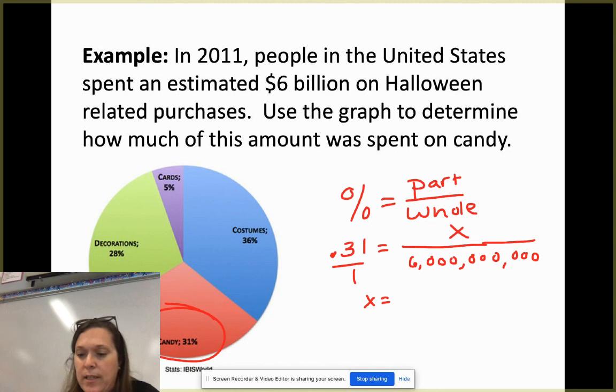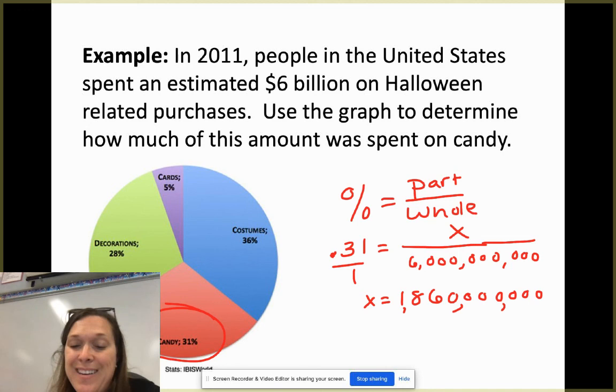All right, so here we go. Multiplying, or put that over one and cross multiply. That would get us X equals 0.31 of $6 billion. How many zeros do I need? Nine. Gives me eight. One, eight, six, one, two, three. One, two, three, four. So we are at $1,860,000,000. Would be how much is spent on candy. That's a lot of candy.